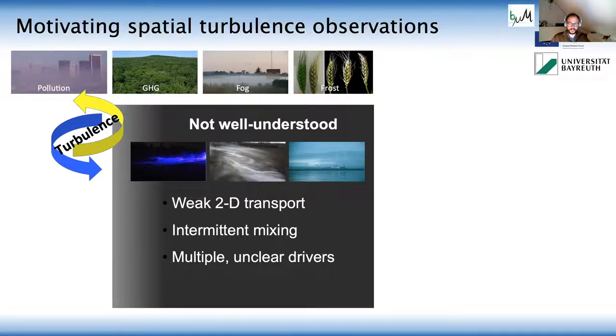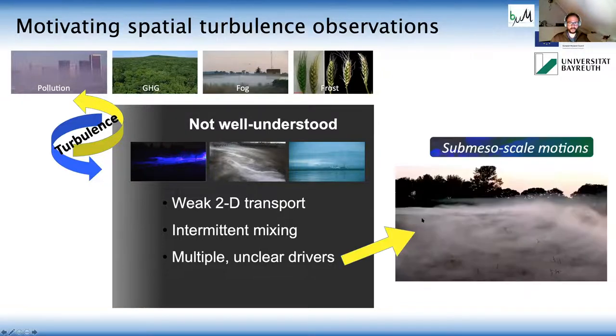So one of the main suspects we've been researching over the past couple of years are the so-called submesoscale motions that we were able to capture with artificially generated and released fog here on the right-hand side. And this basically, the idea is that the submesoscale motions move through your domain, and they generate this very intermittent and weak mixing.